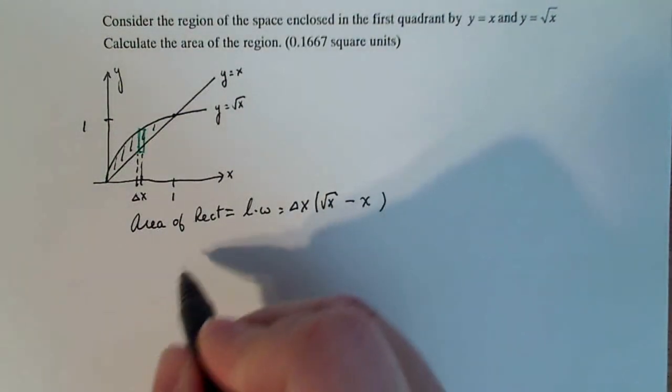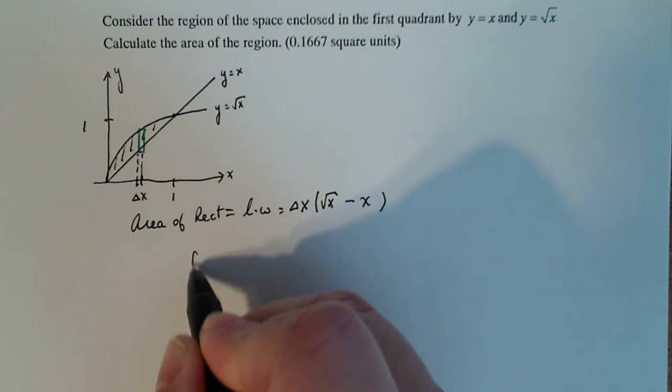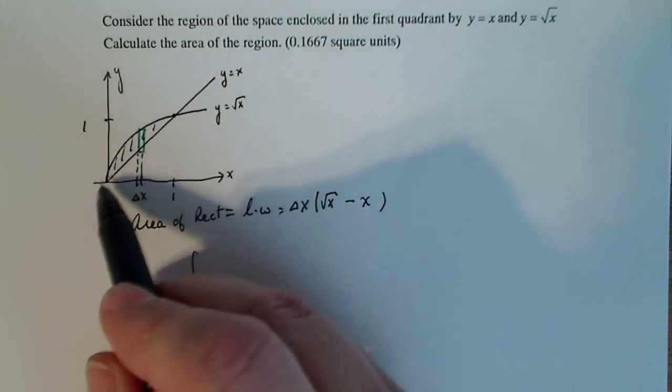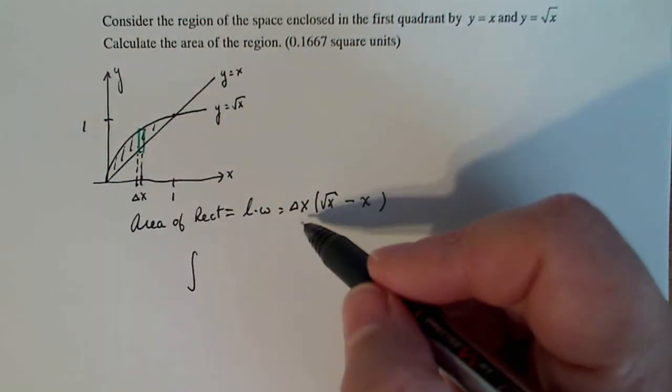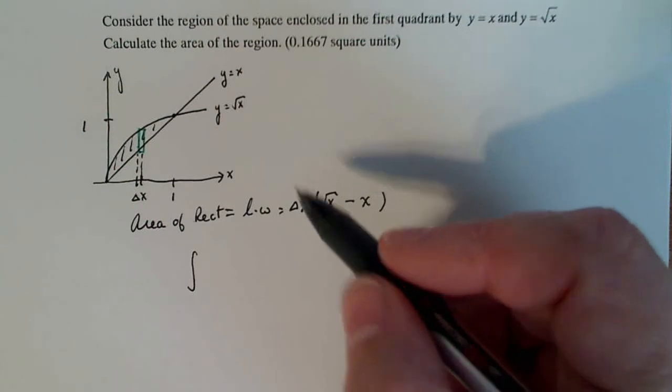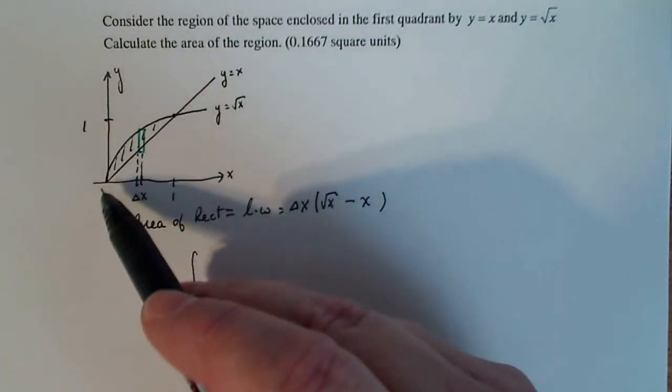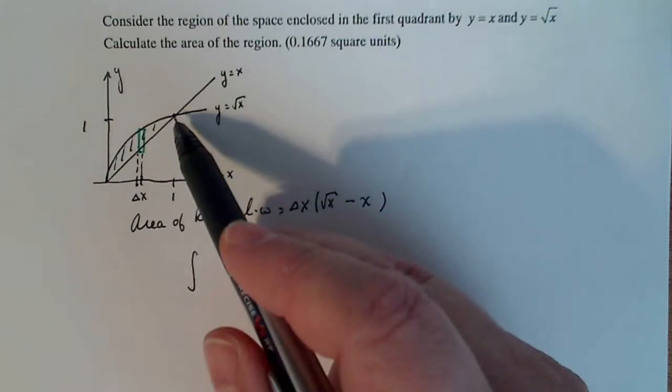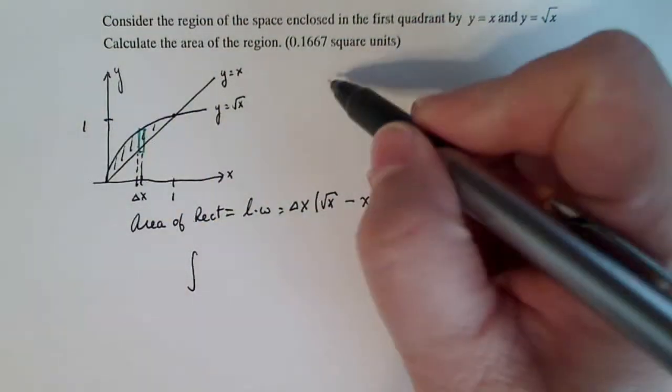Now, if I want to actually talk about summing up all the rectangles that I'm going to be able to draw from here to here, letting delta x go to zero, so they're teeny, teeny rectangles, I have to figure out my bounds on my x-axis. So it looks like I already know from zero to one, but just in case,